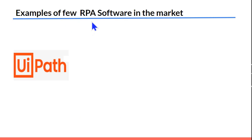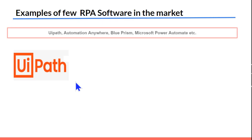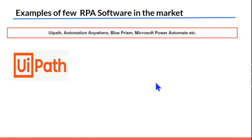Some of the RPA software tools include UiPath — which we are going to focus on in this tutorial — as well as Automation Anywhere, Blue Prism, and Microsoft Power Automate. There are multiple different RPA tools in the market today. We will be focusing on UiPath, so let's move on to our next topic.